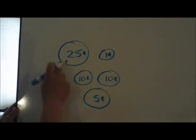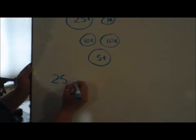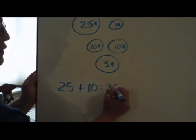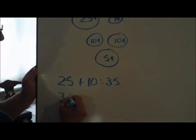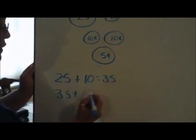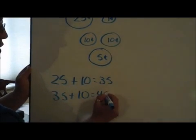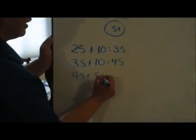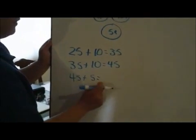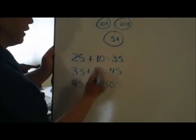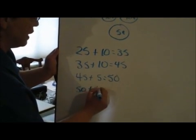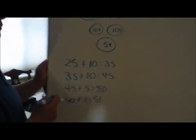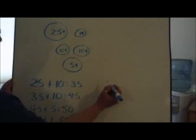One way to add these is: 25 cents plus a dime is 35 cents, plus the other dime is 45 cents, plus the nickel is 50 cents, plus the penny is 51 cents. So our total is 51 cents.